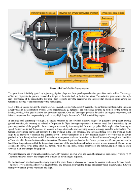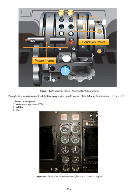Turbine temperature is a very important factor in power production. It is directly related to fuel flow and thus to the power produced, and needs to be limited because of strength and durability of the material in the combustion and turbine section. The control system schedules fuel flow to produce specific temperatures and to limit those temperatures so that the temperature tolerances of the combustion and turbine sections are not exceeded. The engine is designed to operate for its entire life at 100%; all of its components, such as compressors and turbines, are most efficient when operated at or near the RPM design point. Powerplant control is achieved by means of a power lever and a condition lever for each engine. There is no mixture control and/or RPM lever as found on piston engine airplanes.